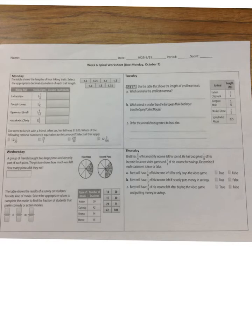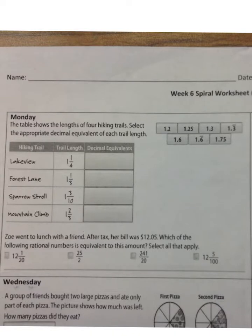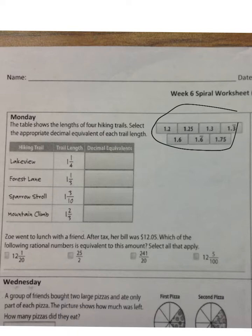For Monday's problem, the first part says the table shows the length of four hiking trails. Select the appropriate decimal equivalent of each trail length. Over on the right we have some possibilities for your conversions. For Lake View it's one and one-fourth, and we need to convert that to a decimal. The fourths are pretty easy to memorize.